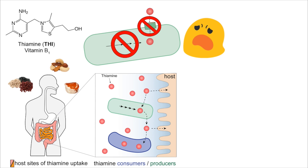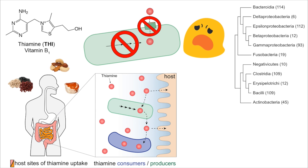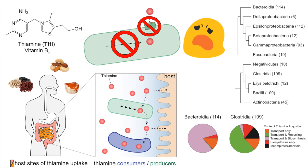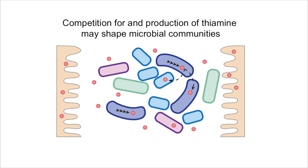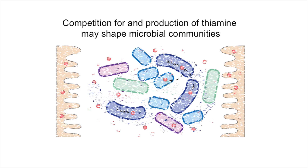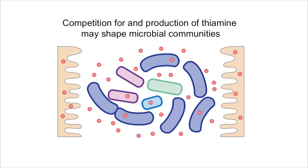Taking what we learned from B-theta, we then computationally identified these systems in 640 other gut bacteria to better understand the importance of thiamin to the gut community. From this, we learned that major classes of gut bacteria utilize different techniques to acquire thiamin. In conclusion, we hypothesized that the production of and competition for thiamin may shape microbial communities.